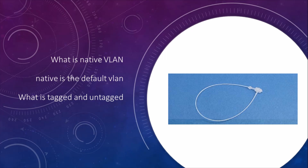We can manipulate the native VLAN to some other VLAN if we want. Now, what is tagged and untagged VLAN? If we are adding any VLAN information into the data frame, that is a tagged VLAN. If it does not add any VLAN information, it is an untagged VLAN. I will show you clearly in the demonstration.